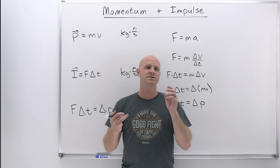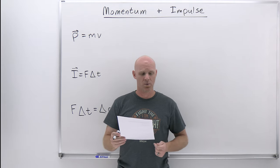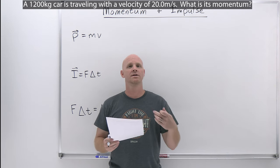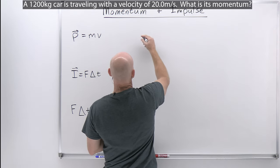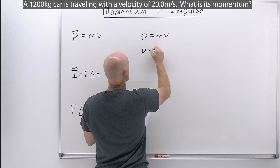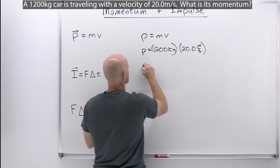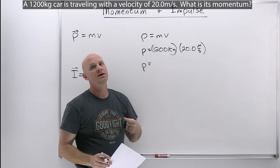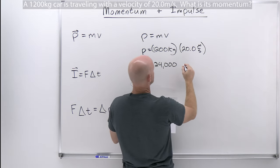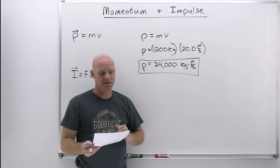We'll start easy and work our way up. The first question: a 1200 kilogram car is traveling with a velocity of 20.0 meters per second. What is its momentum? Momentum is just mass times velocity, and both are given in SI units. So 1200 kg times 20.0 m/s gives us 24,000 kilogram meters per second. That is the magnitude of the momentum, and it's in the same direction as the velocity.